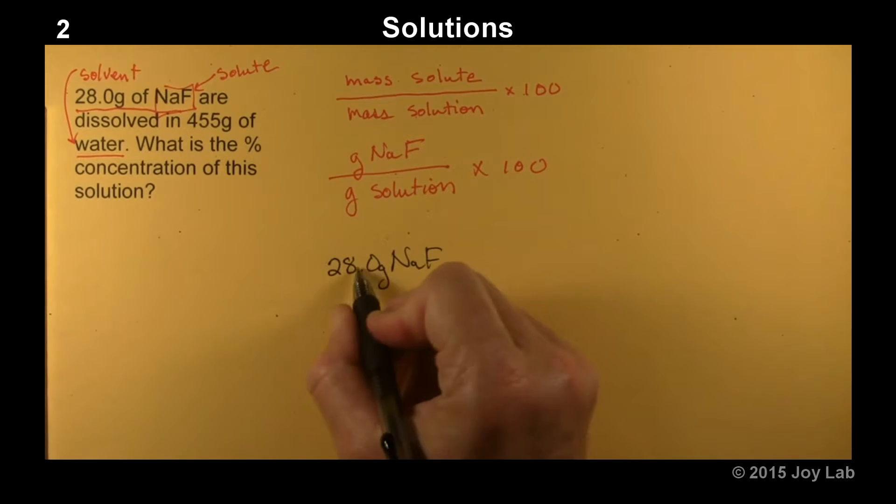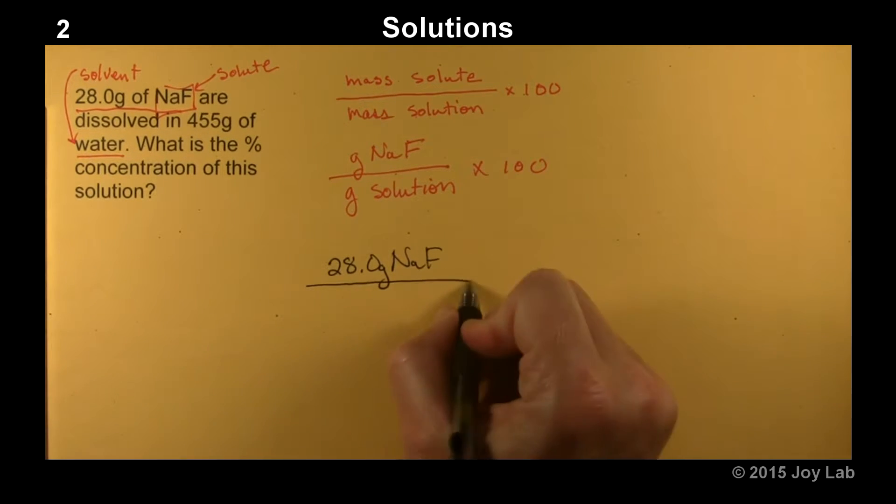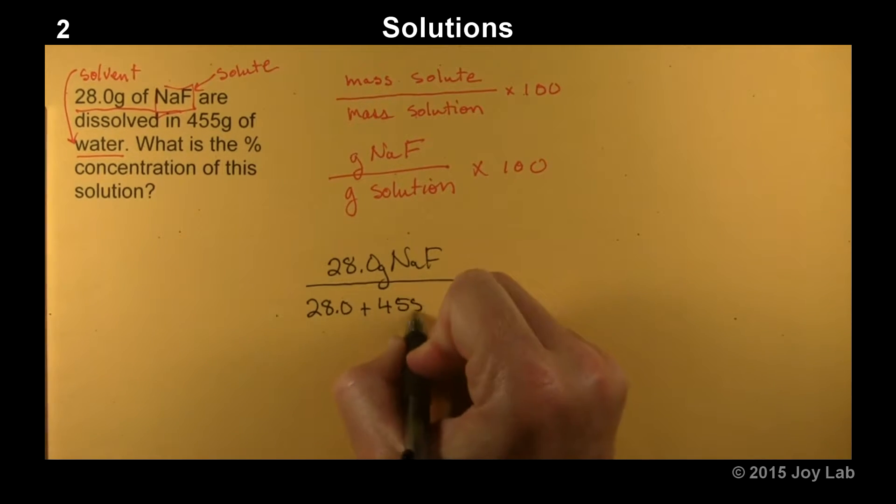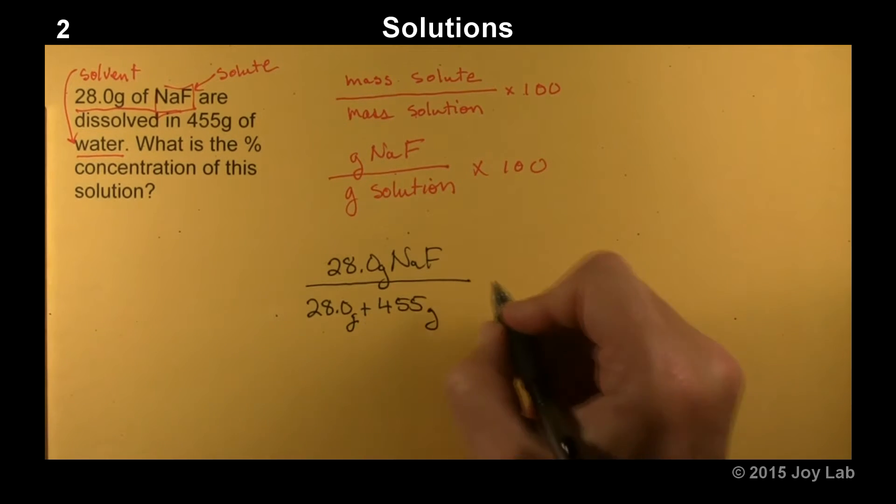So we got the solute, but then the mass of the solution is going to be 28.0 plus 455. Take that and multiply it by 100.